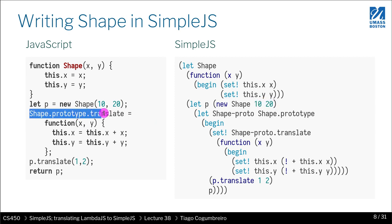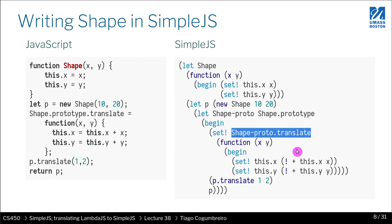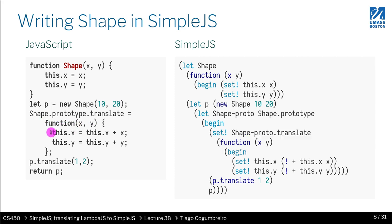Then we have this assignment where we're doing shape.prototype.translate. As you will see in SimpleJS, that's not possible, you cannot do multiple dots. So you have to encode it with lets. If I want to access translate, I first need to load the prototype object. I do let shape-proto to read the prototype. Then if I want to mutate it, which is what I'm doing here, I use set!. This is the field I want to assign, and then the code is this anonymous function.